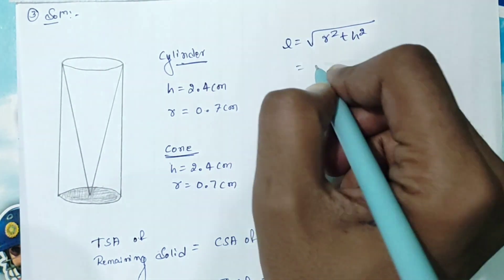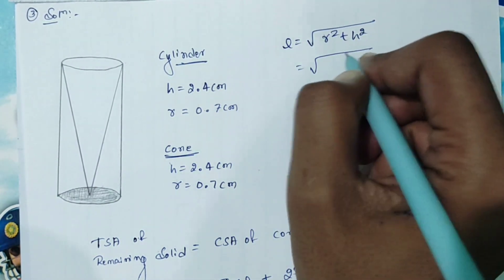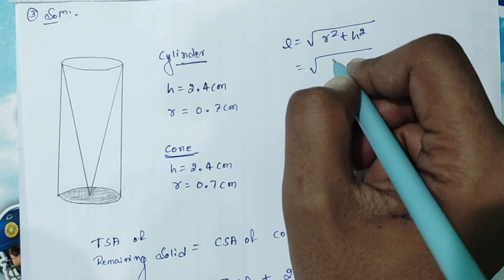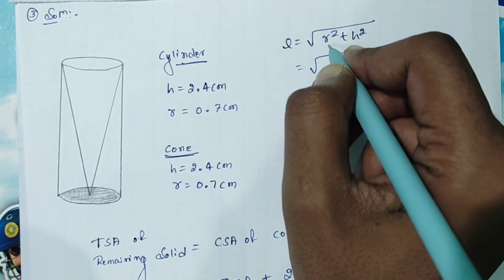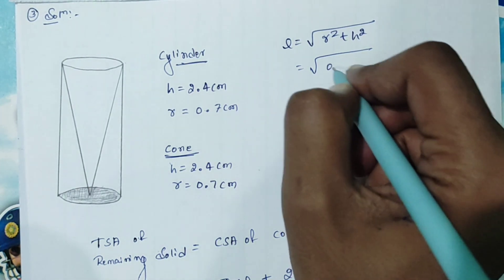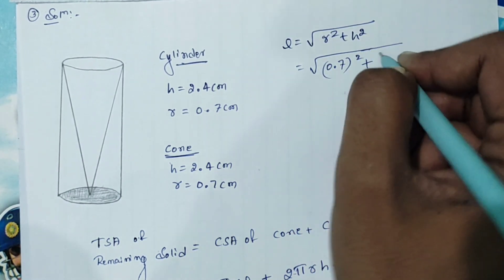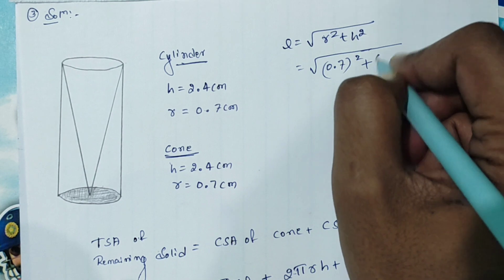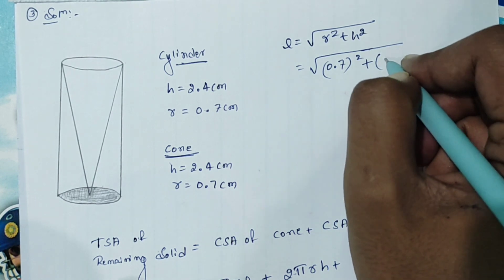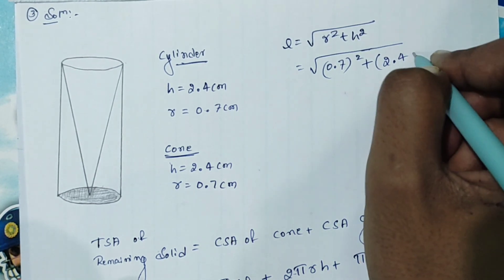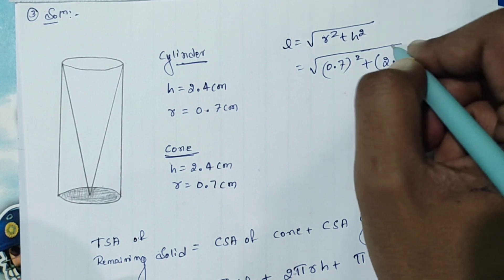Substitute the value and get it. The answer that is r² is 0.7² plus 2.4².